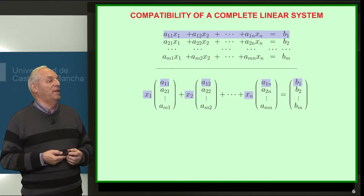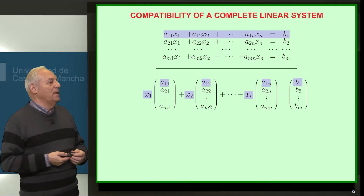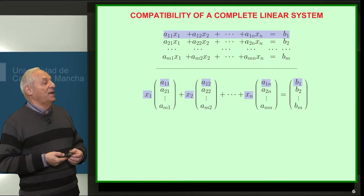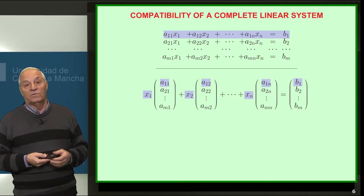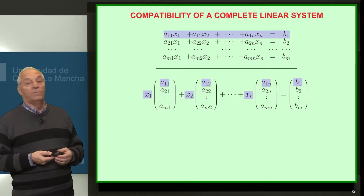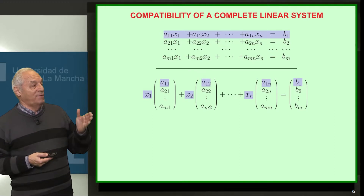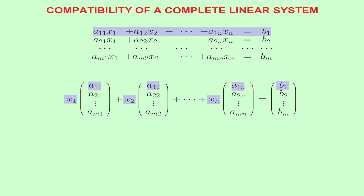What will be the first component of the vector on the left and the vector on the right? The first component on the right is clearly b1. The first component of the vector on the left will be x1 times a1-1, plus x2 times a1-2, plus xn times a1-n — which is exactly the first equation above — and that equals b1, the first component of b.